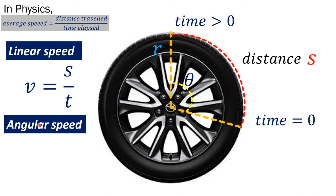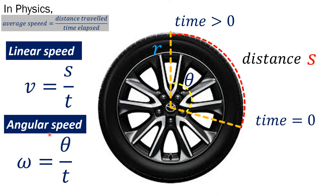That is the angular speed. The angular speed is interested in knowing the number of revolutions or radians that can be generated at a particular time. It is symbolized by the Greek letter omega, which is equal to the angle measurement in radians over time. So you are interested in the number of revolutions in a particular time.